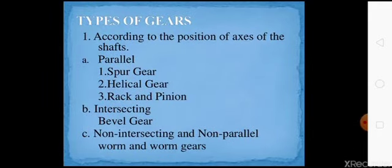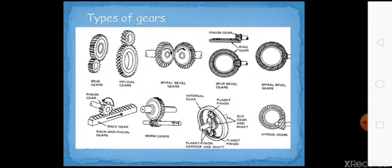Next, types of gears. Types of gears are based on the position of the axis of the shaft. First one is parallel: spur gear, helical gear, rack and pinion gear. Next one is intersecting, where the main axis intersect. An example is bevel gear. Non-intersecting and non-parallel includes worm and worm gears. These are the types of gears.